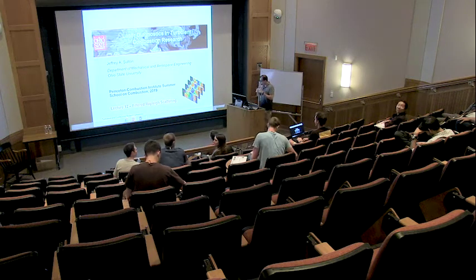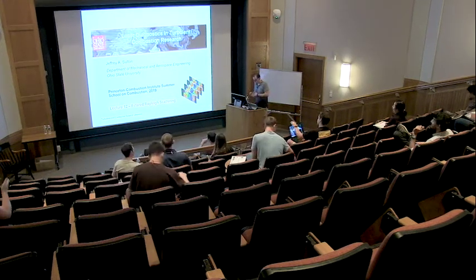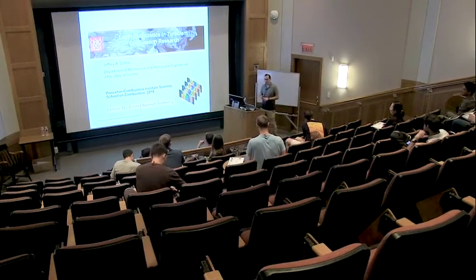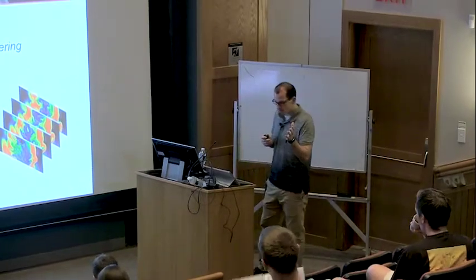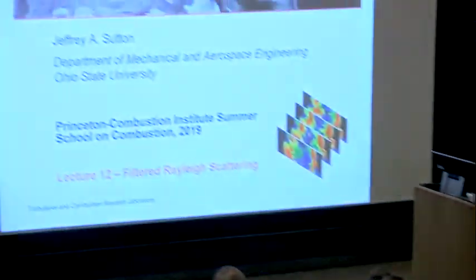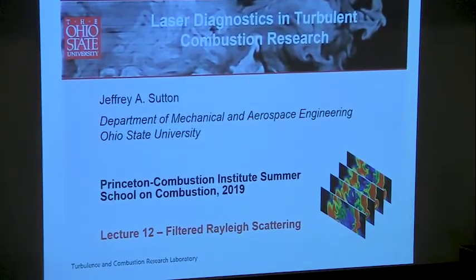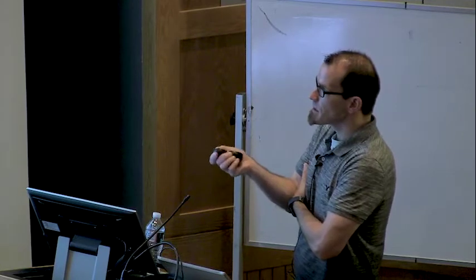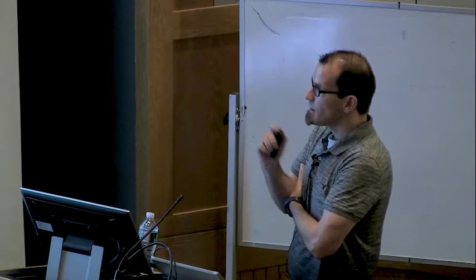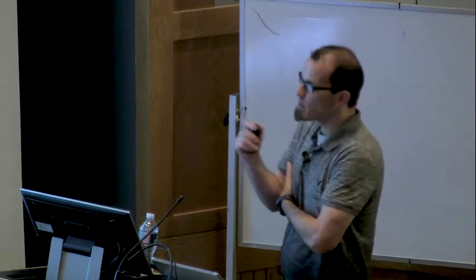We're going to get started on the last day. We finished yesterday talking about Rayleigh scattering and the complications of applying it in the presence of interfering media — walls, particles, surfaces, windows — which can pose significant problems. Today we'll briefly review some limitations and then talk about an approach called filtered Rayleigh scattering, which can block some portion to all of your interference depending on the experiment, and then show some applications of FRS in reacting flow.